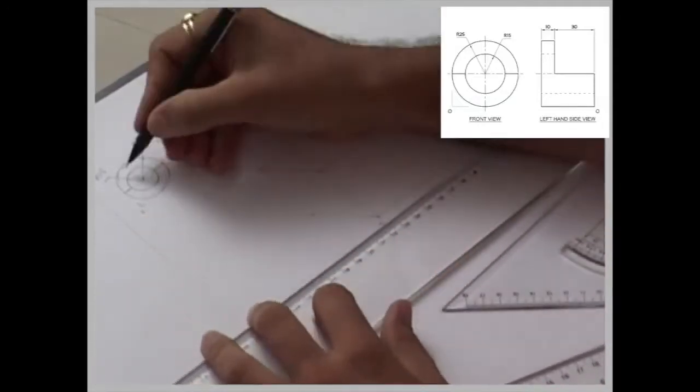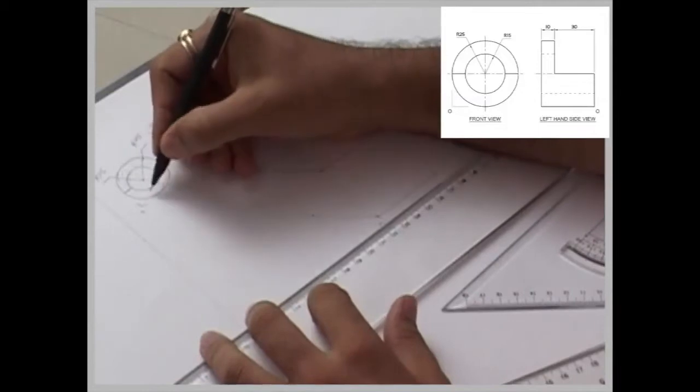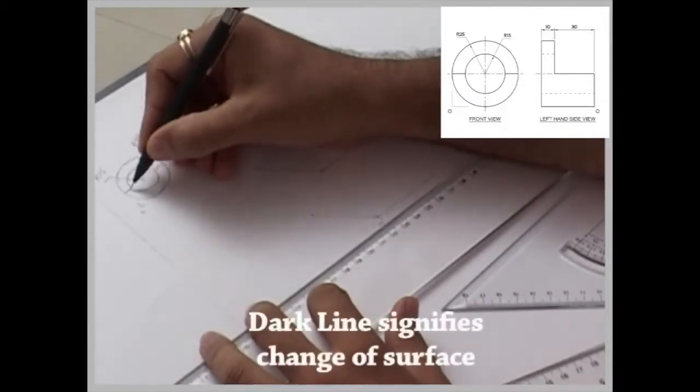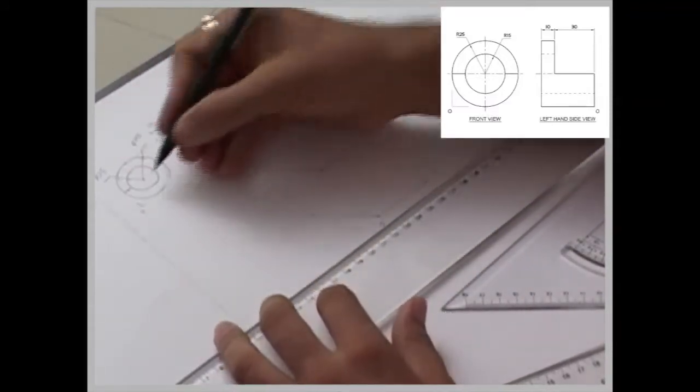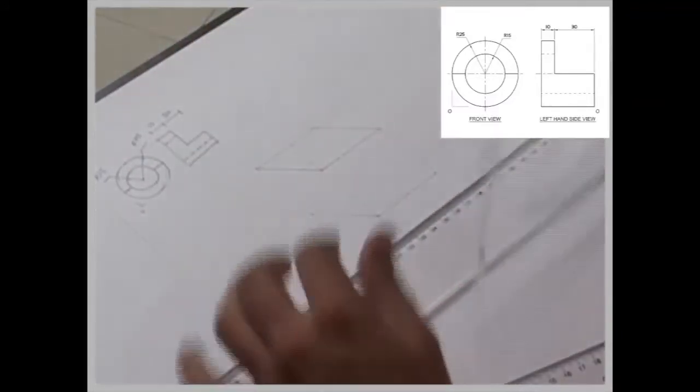Now if you see circle, it is divided into two parts with this dark line. That means this lower half is in front and the upper half is behind. So first we will take the maximum of this.